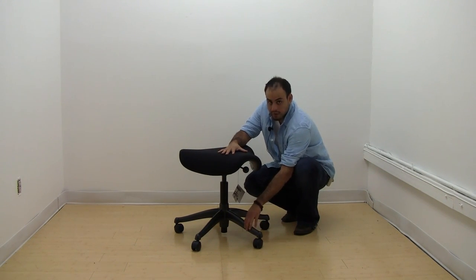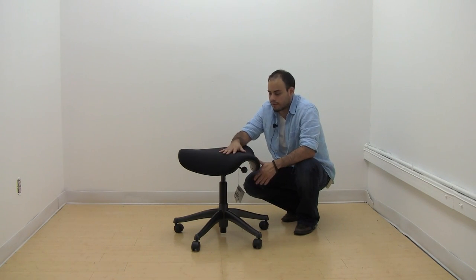Another option you can get on the saddle stool, besides a variety of different fabrics, there are different bases here. So you have this as the standard graphite base. You can get a titanium base or a polished aluminum base to match the look of your office that you're going for.